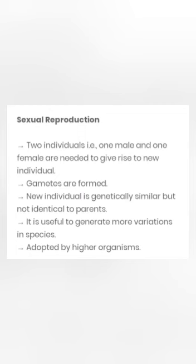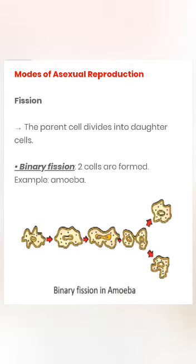Now let us move to the topic of modes of reproduction used by a single organism — that means modes of asexual reproduction. The different types of asexual reproduction are fission, fragmentation, regeneration, budding, vegetative propagation, and spore formation.